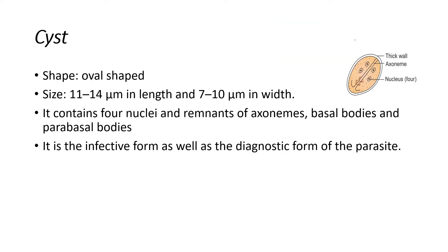Cyst: the shape is oval. Size is about 11 to 14 micrometers in length and 7 to 10 micrometers in width. It contains four nuclei, remnants of axostyles, basal bodies, and parabasal bodies. It is the infective form as well as the diagnostic form of the parasite.